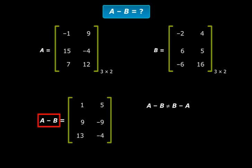In fact, we have just found out A minus B. So why don't you go ahead and find out B minus A and check this yourself. You will find out that A minus B is not equal to B minus A. And what does this mean? This means that the subtraction of two matrices is not commutative.